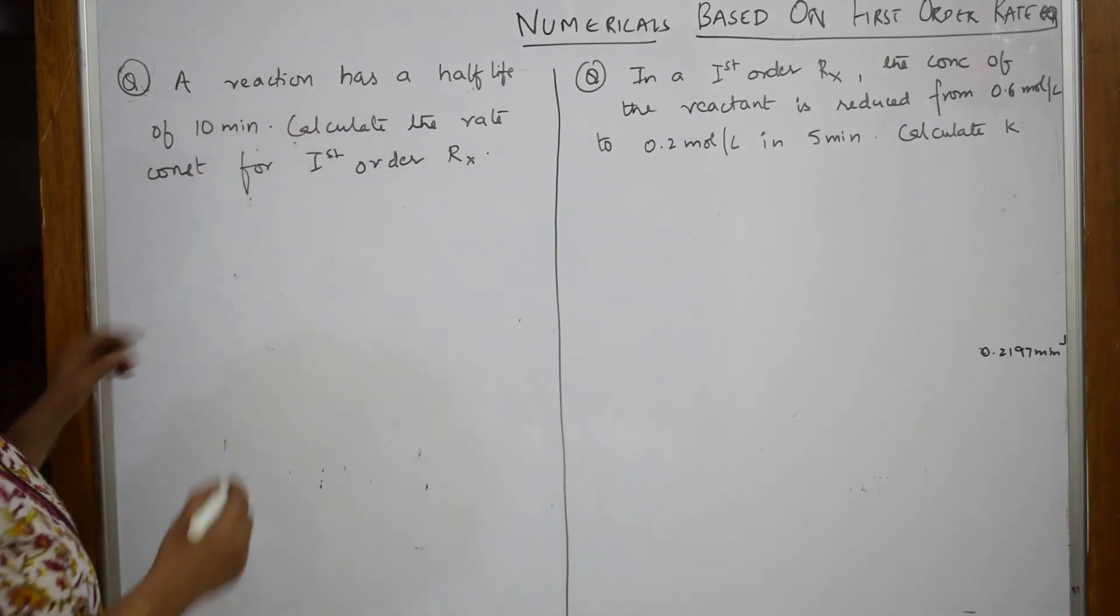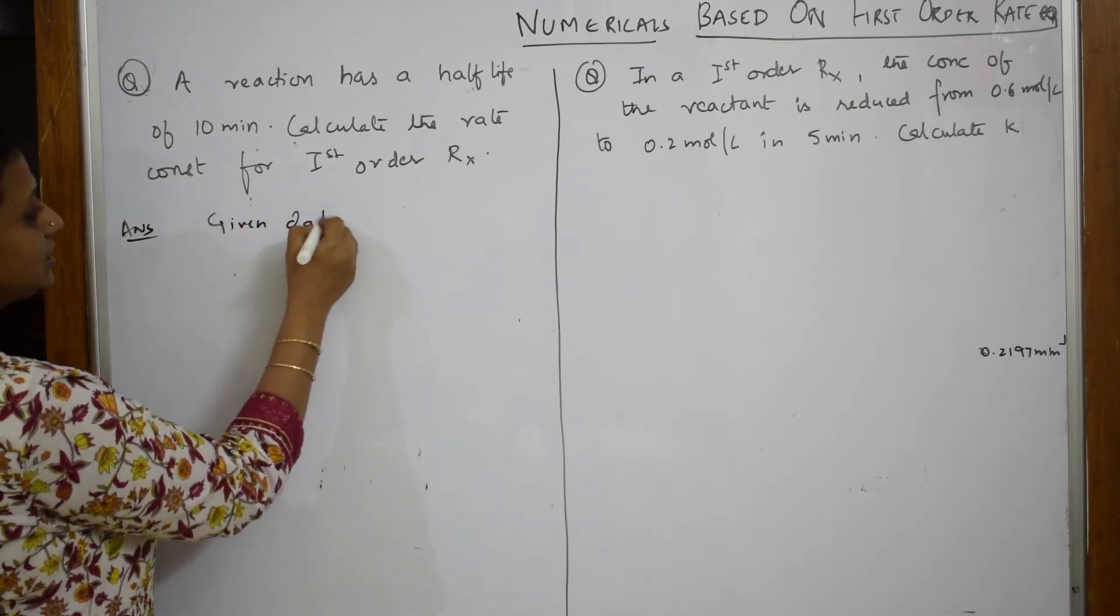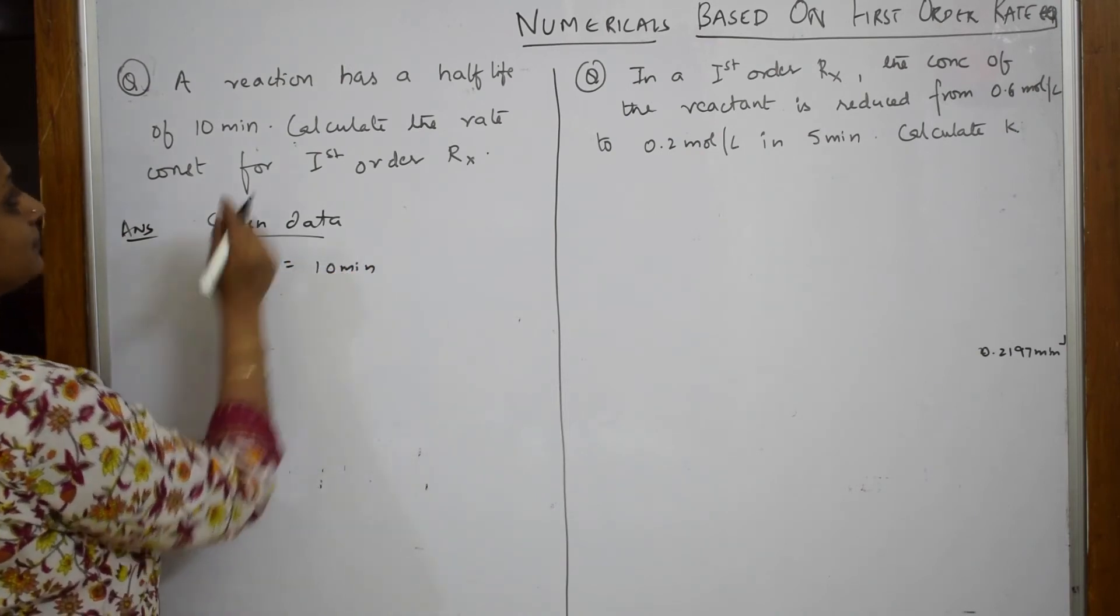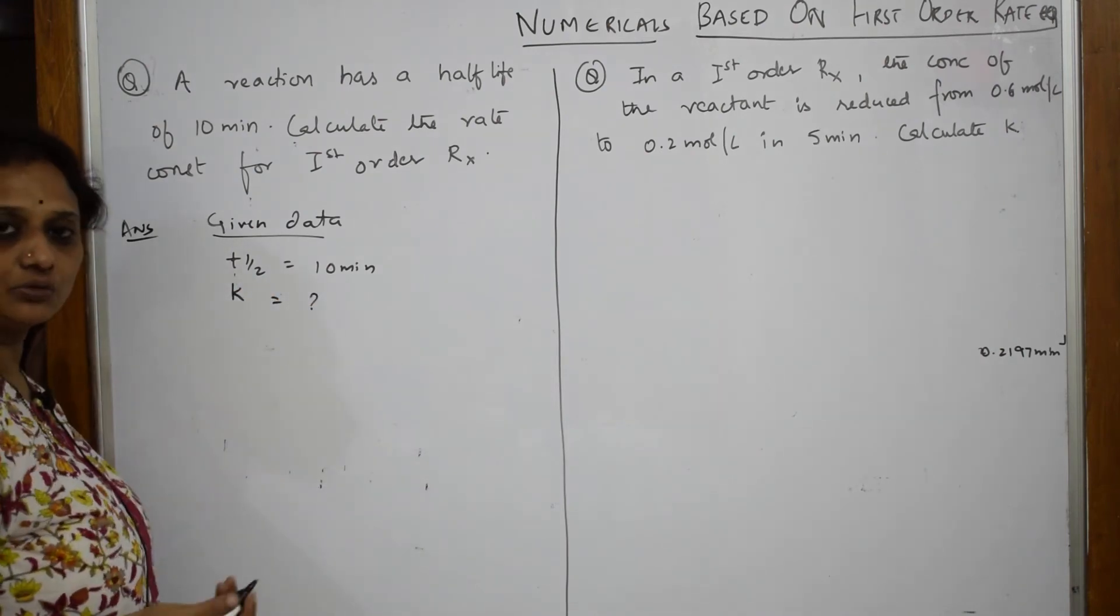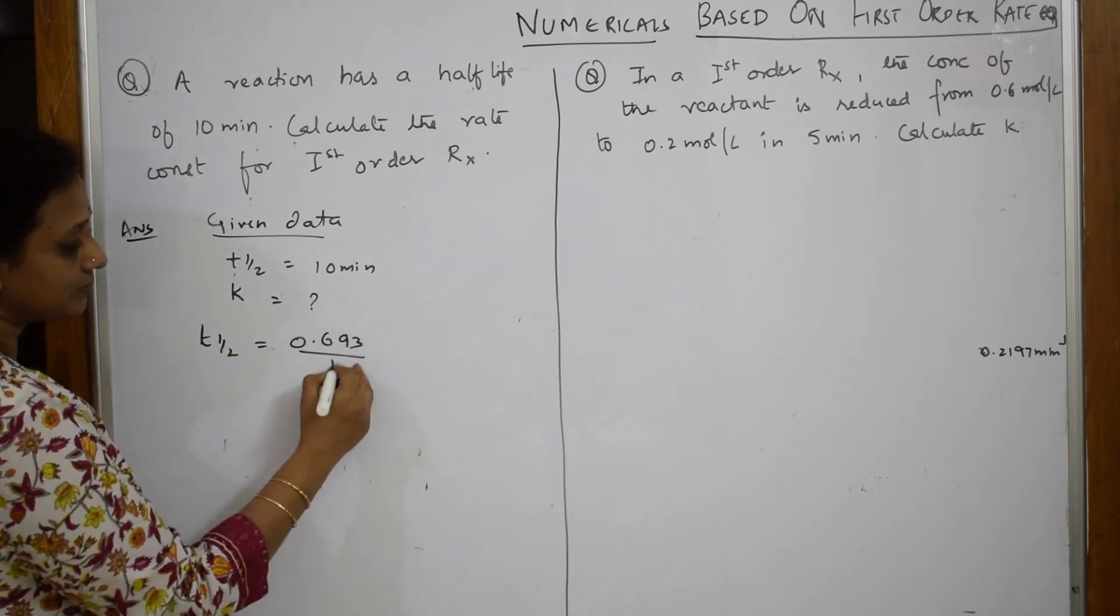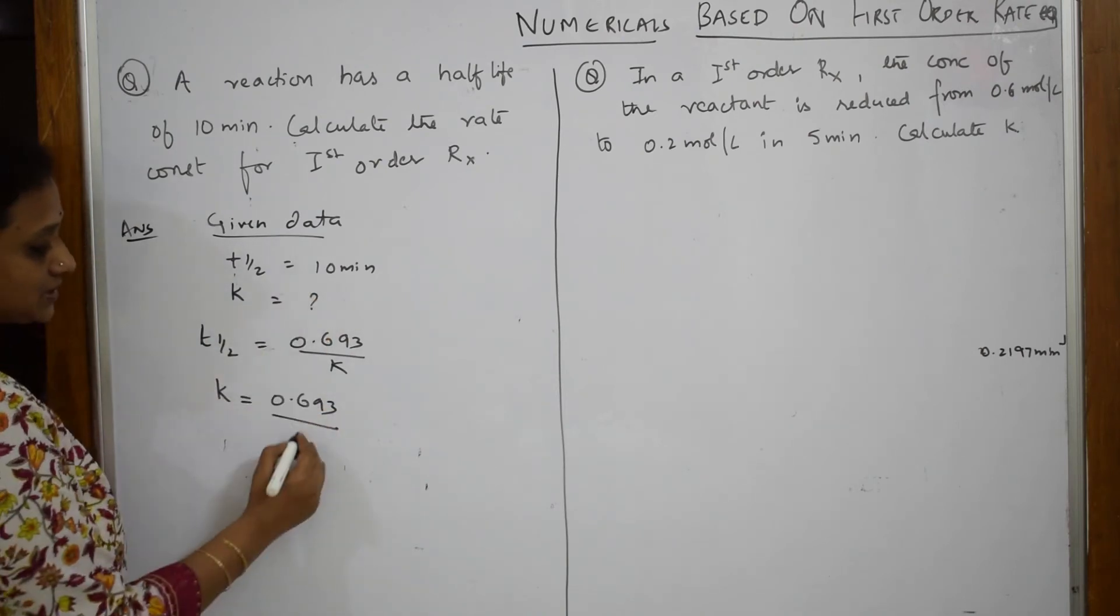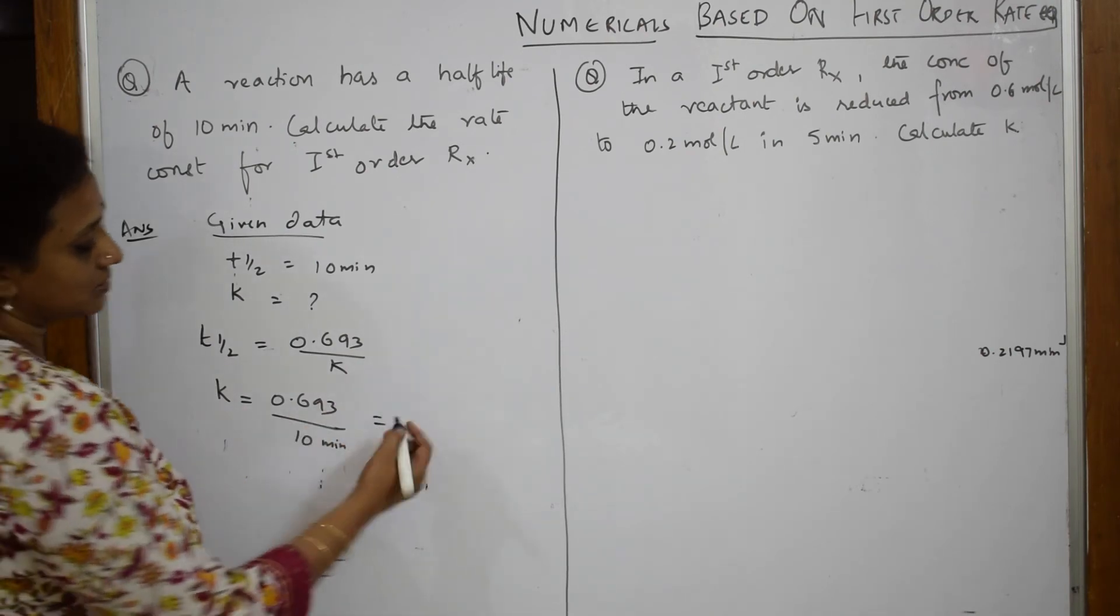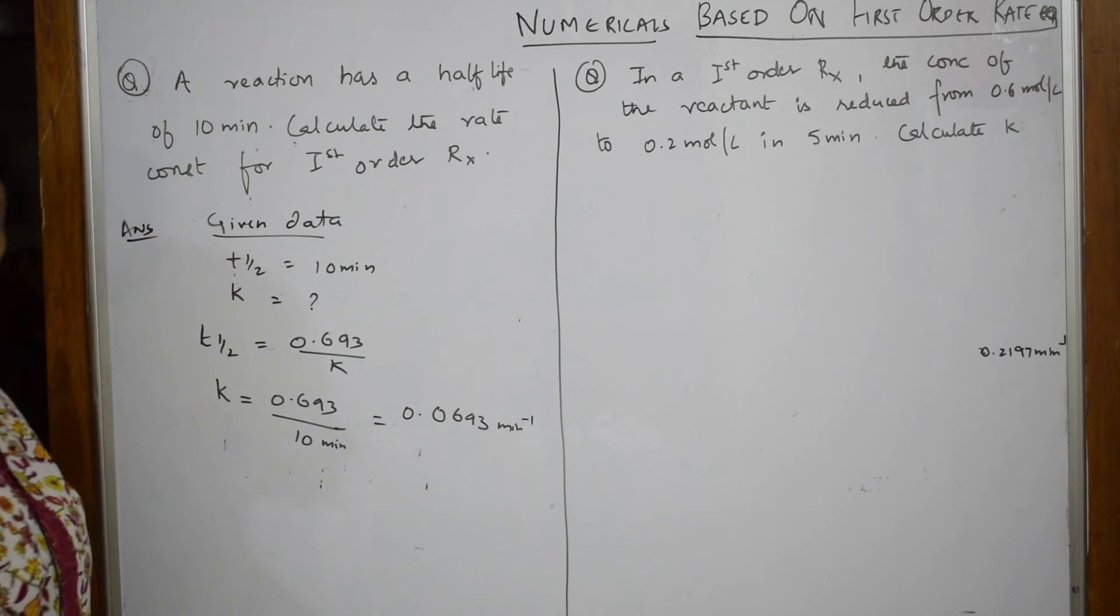A reaction has a half-life of 10 minutes. So, as soon as such a question is given to you, write the data given to you. Given data is half-life, t half is given to me as 10 minutes. I am doing the basic simple example and calculate the rate constant for the first-order. I have to calculate k. Yes, we know the formula for rate constant t half is equal to 0.693 by k. So, t half is given. So, k is equal to 0.693 by t half is 10 minutes. So, when you solve this simple 0.0693.